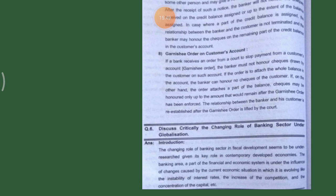The eighth way is a Garnishee order on the customer's account. If the bank receives a court order to stop payment from the customer's account — that is, a Garnishee order — the banker must not honor checks drawn by the customer on such account. If the order attaches the whole balance, the banker can honor no checks. If the order attaches only part of the balance, checks may be honored only up to the amount that will remain after the Garnishee order has been enforced. The relationship between the banker and customer is re-established after the Garnishee order is lifted by the court.